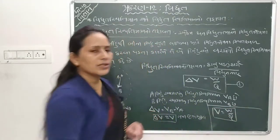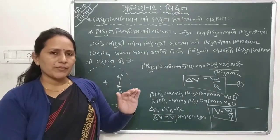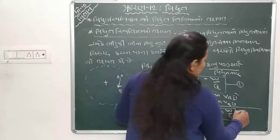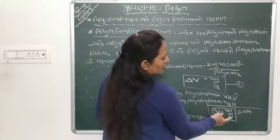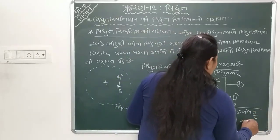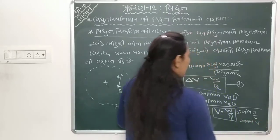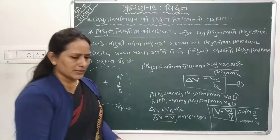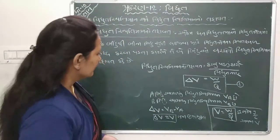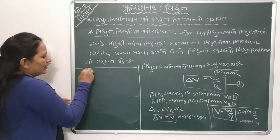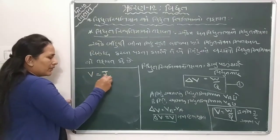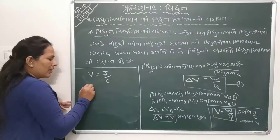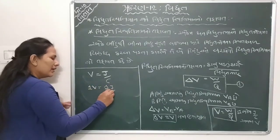Karyano ekam Joule, vidyutbhar no ekam Coulomb, to SI ekam Joule prati Coulomb. Joule prati Coulomb na lakhvu hoy to Italyano vaigyanik Alessandro Volta na maan ma ene Volt pan kahi shakay - Volt no V pan kahi shakay. Ek Volt etle ek Joule jeto karya ane ek Coulomb jeto vidyut bhar.